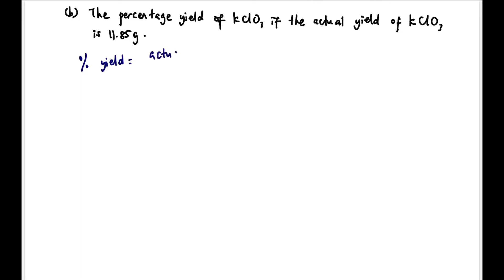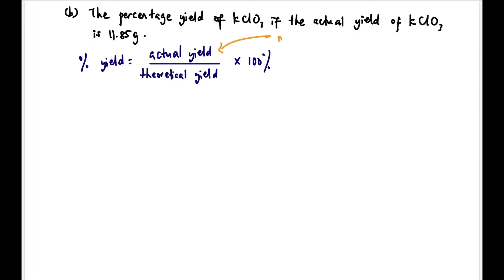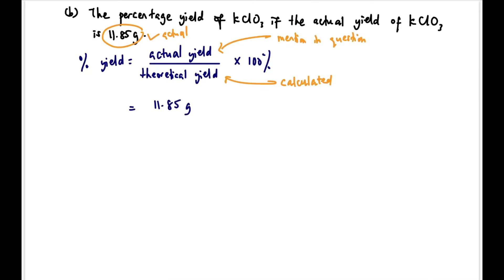For percentage yield: formula is actual yield ÷ theoretical yield × 100%. Actual yield is given in the question as 11.85 grams. Theoretical yield is what we calculated = 16.434 grams. Percentage yield = 11.85 ÷ 16.434 × 100% = 72.1%. Remember: must be mass divided by mass, or volume divided by volume.